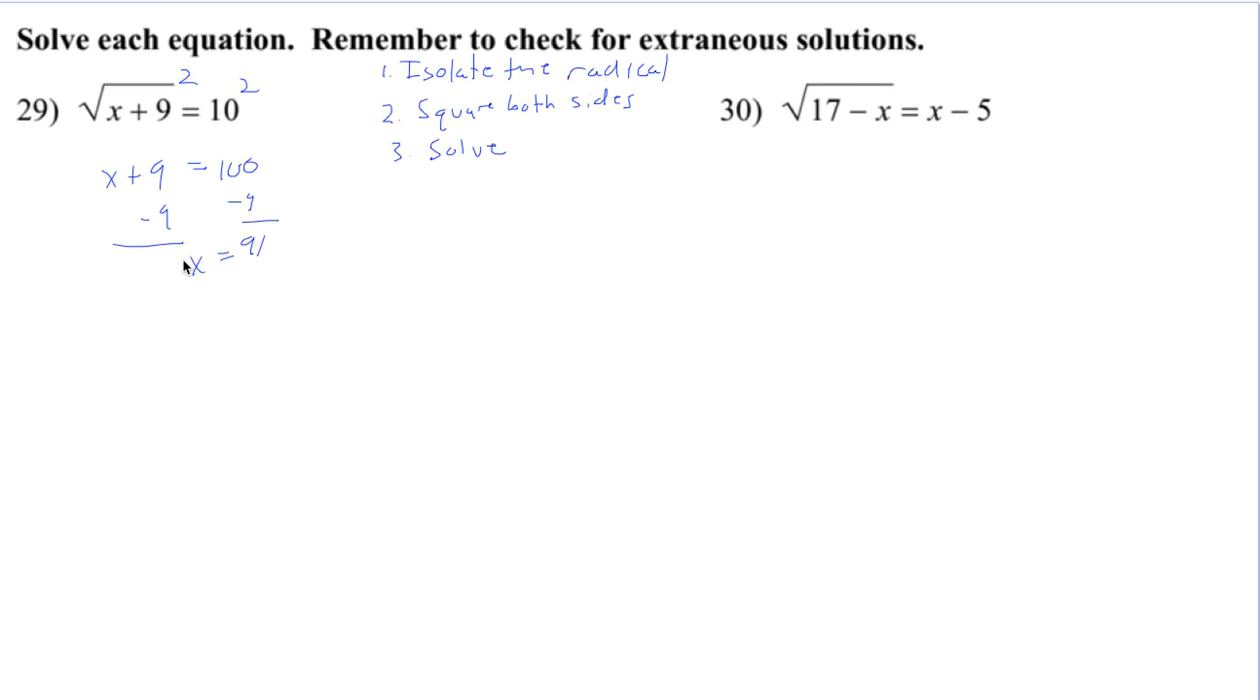Subtracting 9 from both sides gives us 91. So x equals 91 seems to be the answer. Let's plug it back in. 91 plus 9 is 100. The square root of 100 is 10. So this answer works.